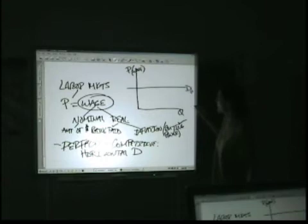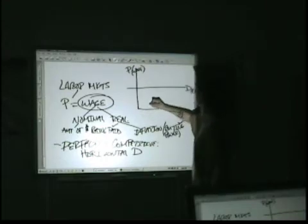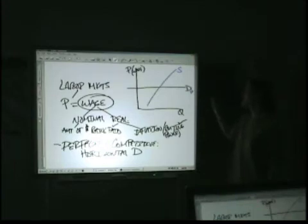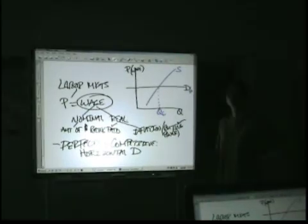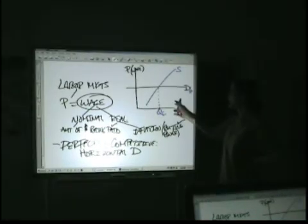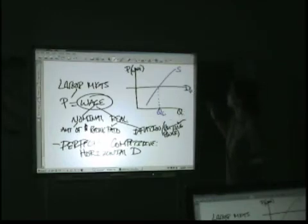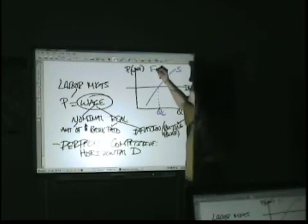Now supply we can add in. Supply, remember, is going to be upward sloping. Demand is going to come from the firm. Supply is going to come from the household. So their equilibrium quantity is going to be determined by that intersection. So for this model, this would be the labor market facing the individual firm. This is for the firm.